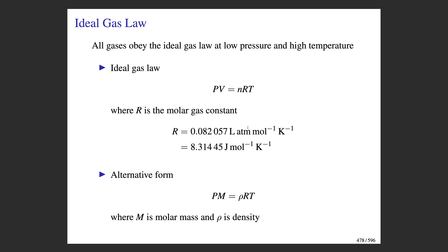The gas constant can take on different units. Expressed as liter atmospheres, you have 0.0821. In other thermodynamic applications, one is more interested in using the Joule version of the gas constant — converting liters times atmospheres to units of joules gives the value 8.314. For our purposes in this class, we will be using the 0.0821 version, though we might also encounter the 8.314 version when we talk about the kinetic theory of gases.